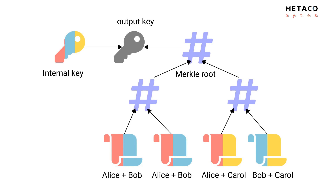With Taproot, you can encode those three conditions and build what we call a Merkle tree — you hash all those scripts together. This is one part used to build the output key. But there's a second thing committed to by the output key: what we call the internal key. The basic idea is that parties involved in a contract might, in most cases, agree to limit the privacy impact of using on-chain transactions. For example, imagine Bob and Carol agree to spend the output — they can ask Alice to co-sign with the internal key as well. On the blockchain, you'd then see only the output key and one signature.